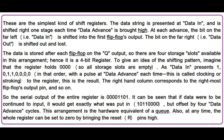The right-hand column corresponds to the right-most flip-flop's output pin, and so on. So the serial output of the entire register is 0, 0, 0, 0, 1, 1, 0, 1. It can be seen that if data were to be continued to input, you would get exactly what was put in — 1, 0, 1, 1, 0, 0, 0, 0 — but offset by four data advance cycles. This arrangement is the hardware equivalent of a queue.